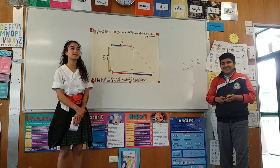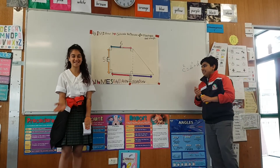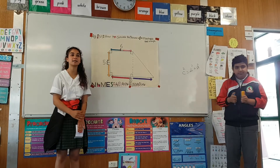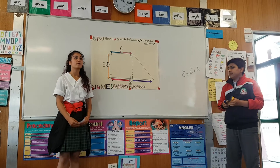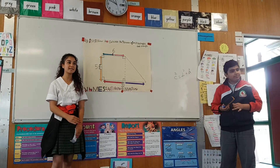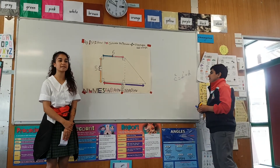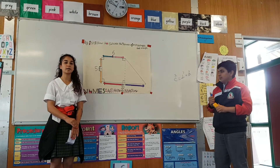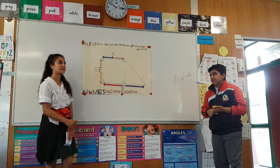Third, when you get the correct missing side, you should square root the answer to get the correct answer for the missing side. Fourth, when you get the answer for the missing side, you should add all the sides around the two shapes to get the total, which is 27.4 cm.